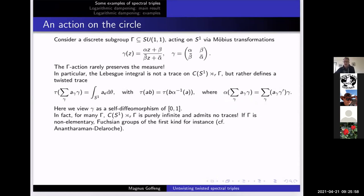This cross product is, under some geometric assumptions like γ being non-elementary and Fuchsian of the first kind, a purely infinite C*-algebra; it's even simple. So there are no traces. There's really no chance of extending this spectral triple to this cross product without doing an alteration that affects finite summability. You really have to take a sledgehammer to the Dirac operator to kill finite summability. You need to do a dramatic change.